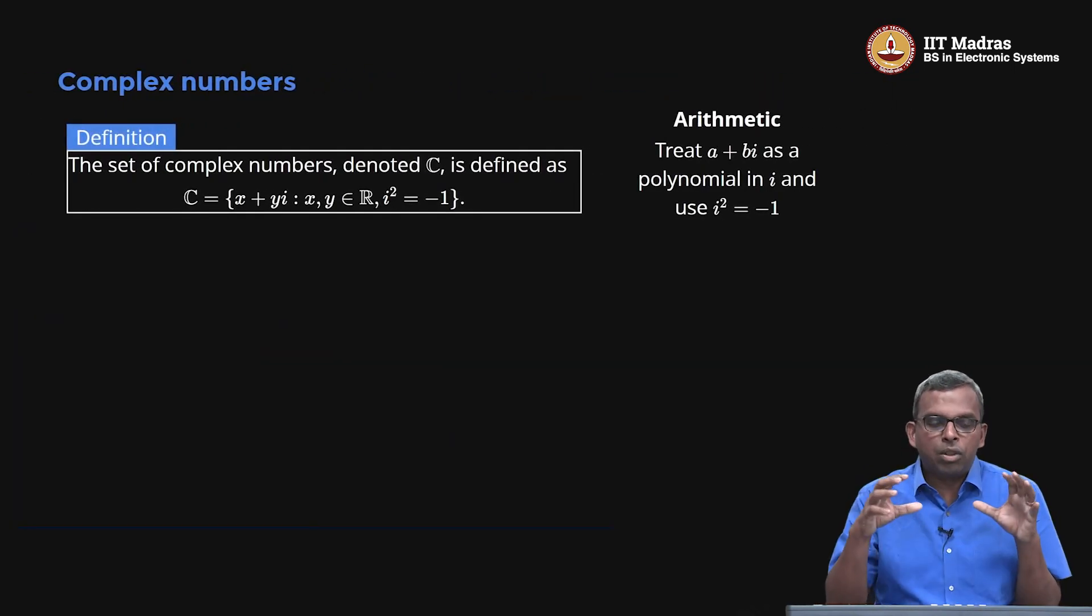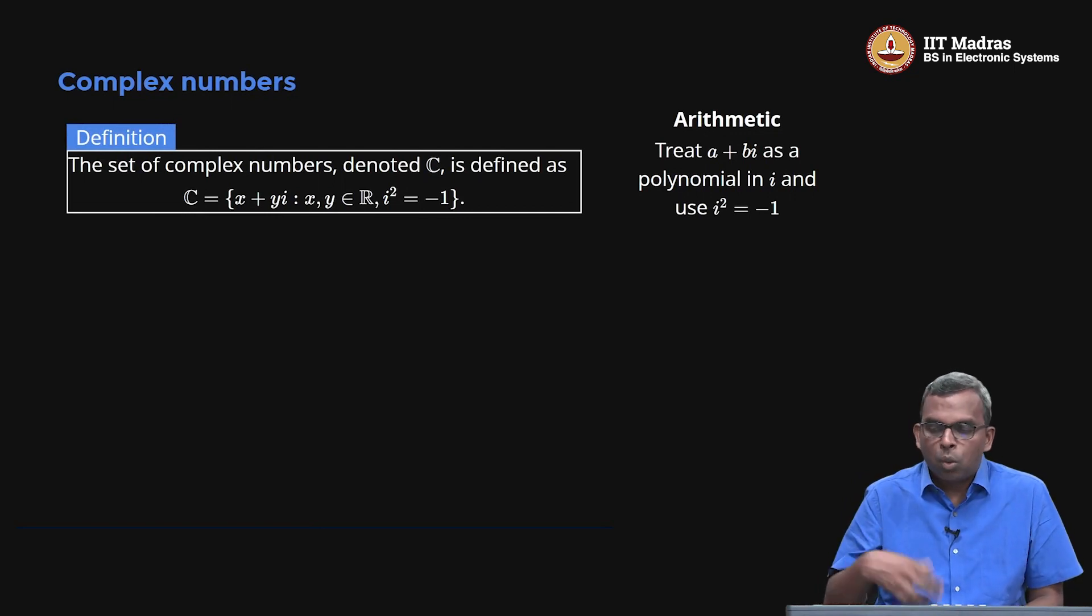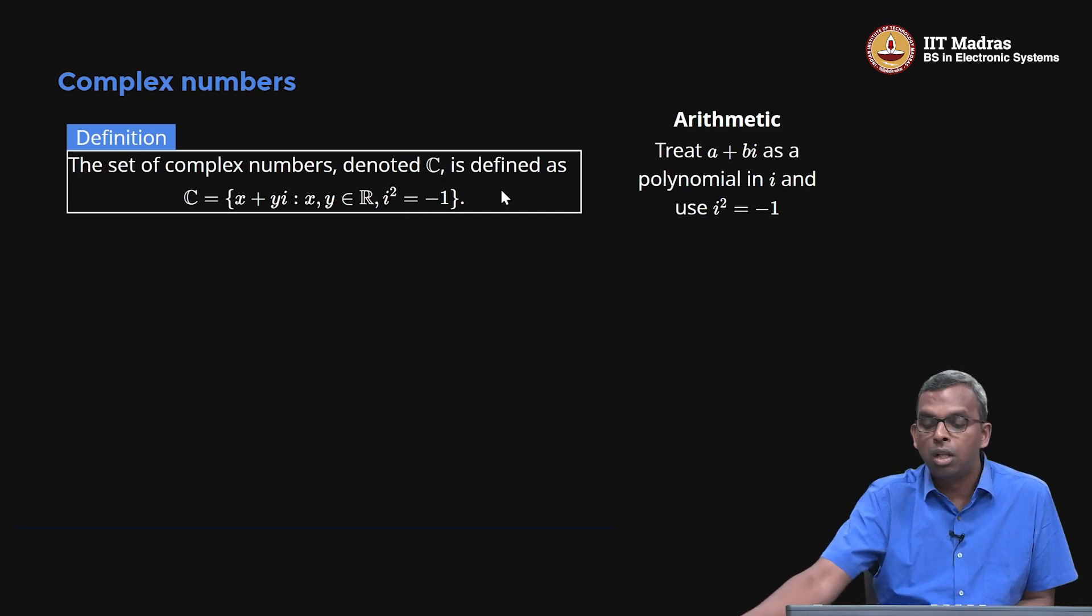Equally interesting is the complex numbers. You know what complex numbers are; we introduced them in Math 1. We denote it as C, defined as x plus yi, where x and y are real. Notice this notation: R for real numbers, C for complex numbers. We've seen this i before—i squared equals minus 1. This relationship is important in the definition for complex numbers.